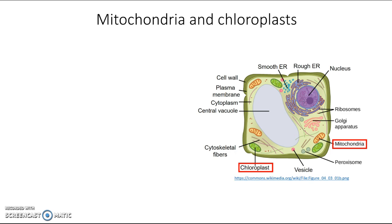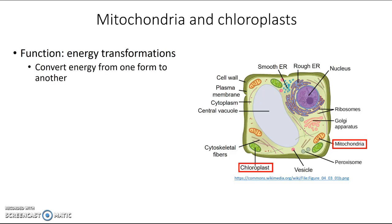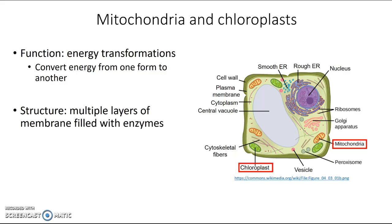On this slide we'll go through some general characteristics that mitochondria and chloroplasts both have in common. Their function for each one has to do with energy transformation — both of these organelles are involved in converting energy from one form to another. In terms of their structure, they both include multiple layers of membrane filled with enzymes. And both of them are found in eukaryotic cells only, so you won't see either of these in prokaryotes.